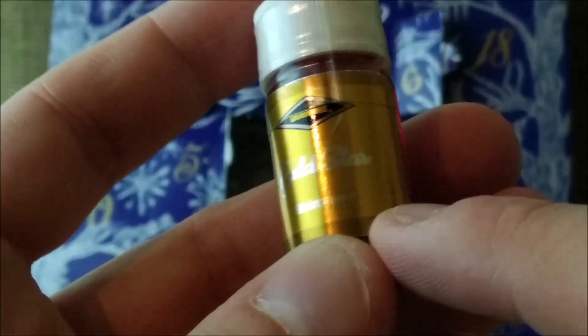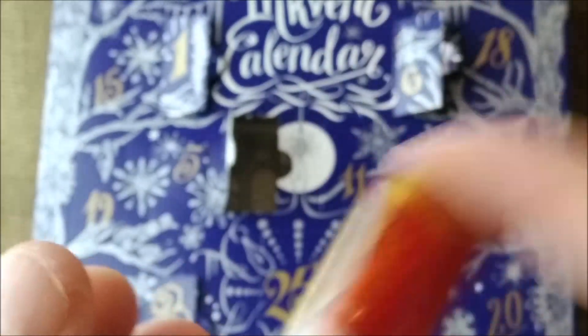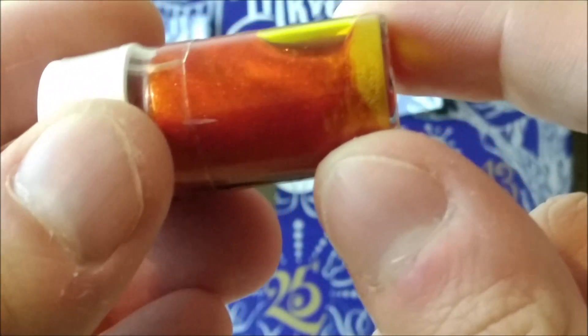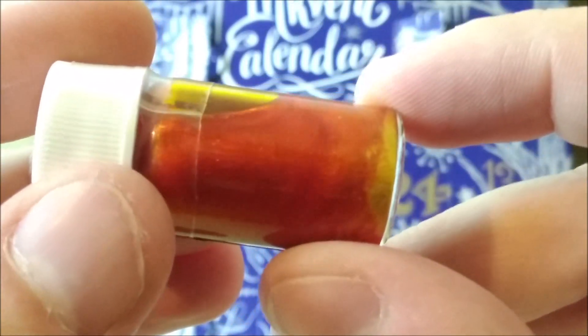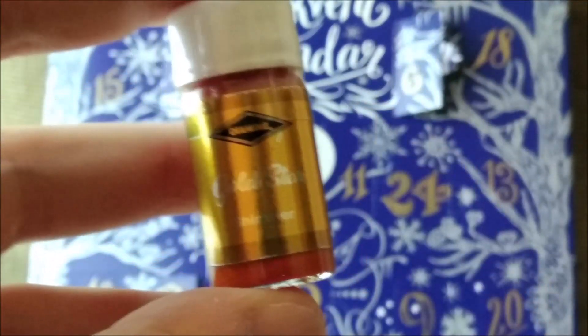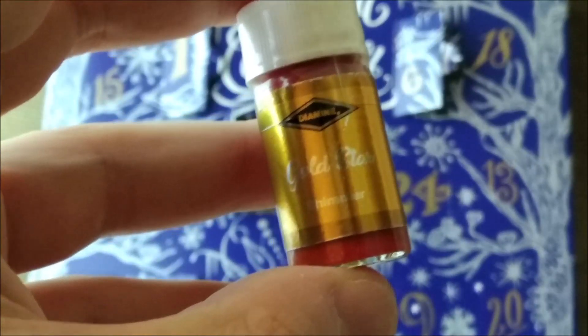It's called Gold Star and it is a shimmer ink. You can see lots of gold particles of glitter there on the bottom and when I shake it you can see them. It's almost as magical as looking into a lava lamp working. I will choose a pen to put this ink in and I'll be right back.